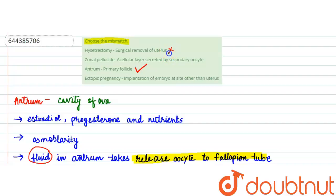If we talk about zona pellucida, it is again correct that it is a cellular layer which is secreted by the secondary oocyte.